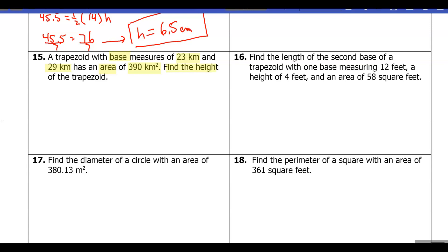So again, let's write down our important information. We'll let b1 be the 23 kilometers and b2 be the 29 kilometers. And we know that the area is 390 km².